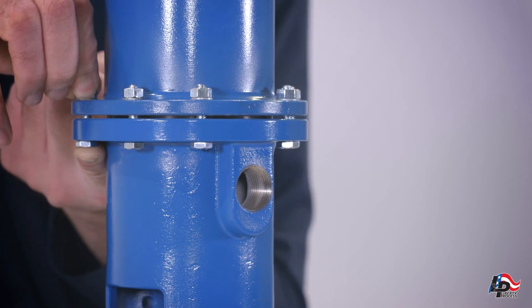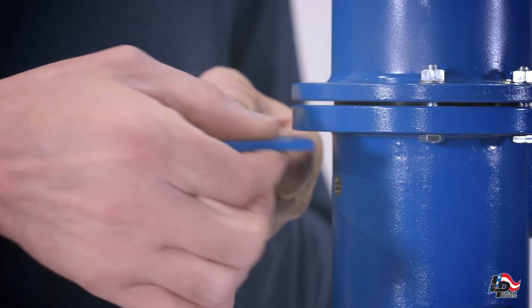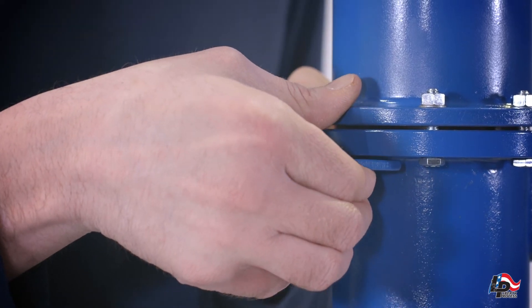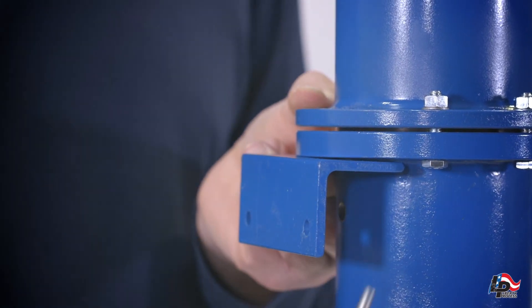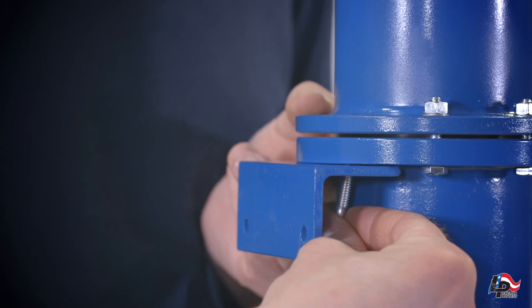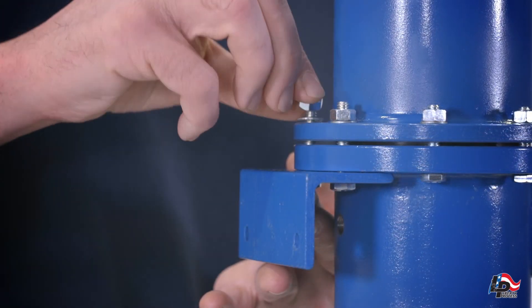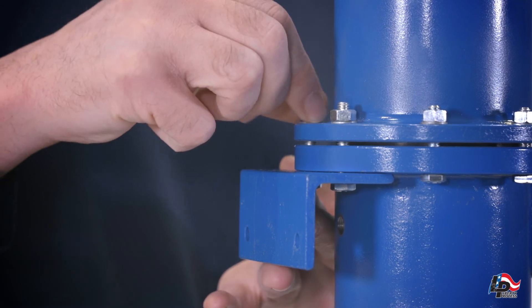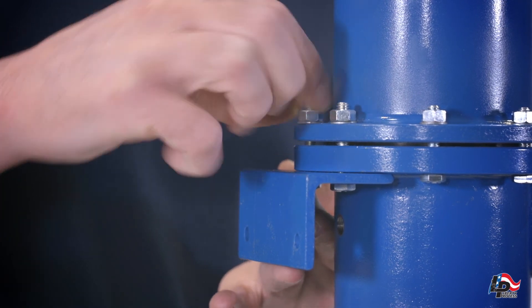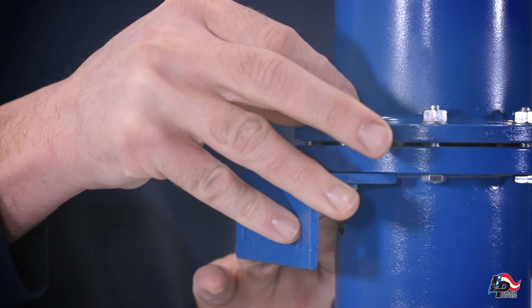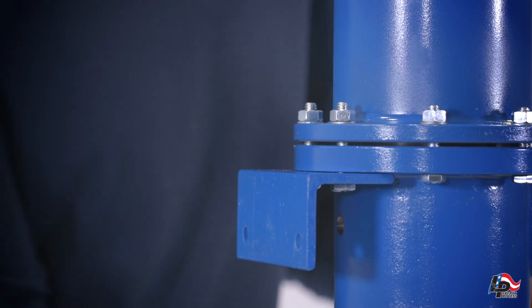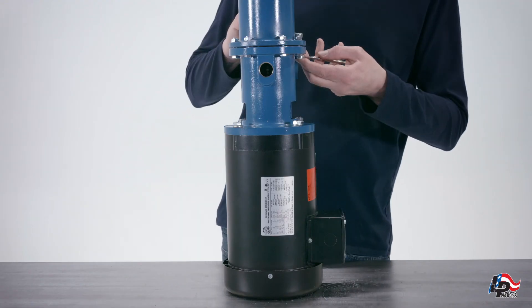Add the pump foot assembly to the bottom of the pump for support. Use the two largest screws to secure. Bolt down the casing till seated.